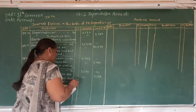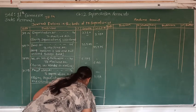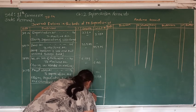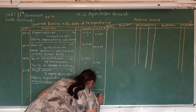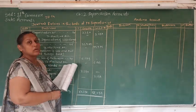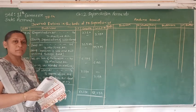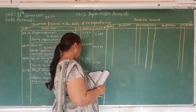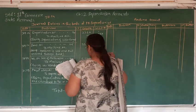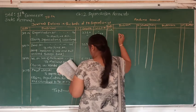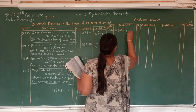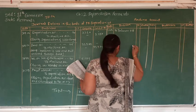Let's make the total of the journal entries — total will be Rs. 68,250. Journal entry is finished. Now let's prepare the machine account. In the machine account, the very first thing given to us in the sum is the opening balance, which we will write on 1st April 2014 — To Balance Brought Down: Rs. 65,000.